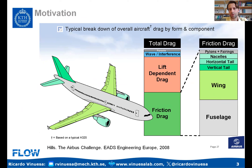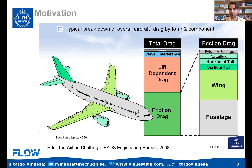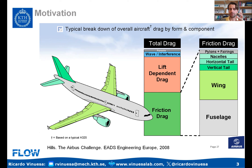We can motivate the work by looking at a typical airliner — this is an Airbus A320. If we look at the different contributors to total drag, about 50% comes from friction, so that's turbulent boundary layers developing around the curved surfaces of the airplane. About 40% of the total drag comes from the lift-induced component, which happens at the wing tips due to the difference between the pressure and suction side, producing wingtip vortices.